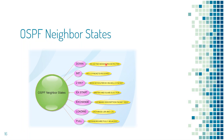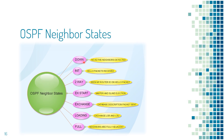In the Down state, no neighbors are detected — no hellos are heard from the neighbor. If the OSPF neighbor is going down, it will clear its link states, including database summary, link state requests, and any retransmissions. In the Init state, hello packets are seen from the neighbor but there is no bi-directional communication established.